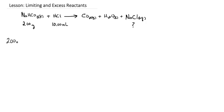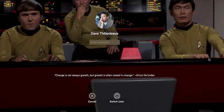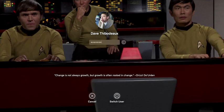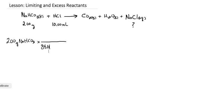All right, so we've got two grams of sodium bicarbonate. From the previous lesson we saw that the molar mass was 84.01 grams per mole. Let me just double check: sodium is 22.99, plus 1.01 for hydrogen, plus 12.01 for carbon, plus 16 times 3 for oxygen — yes, 84.01, that's correct.